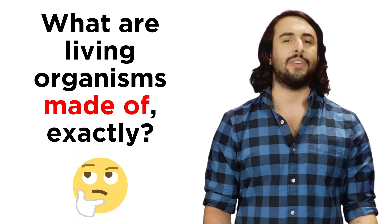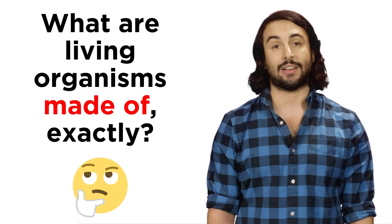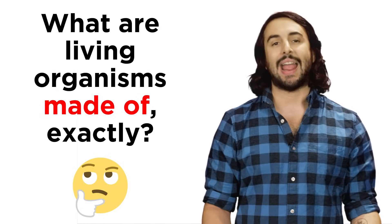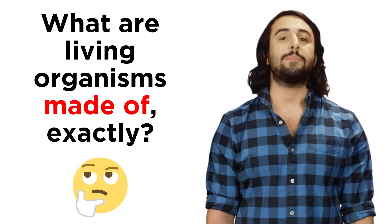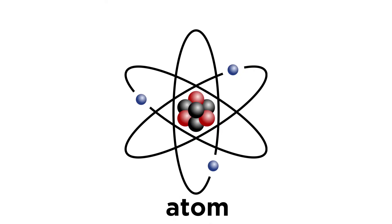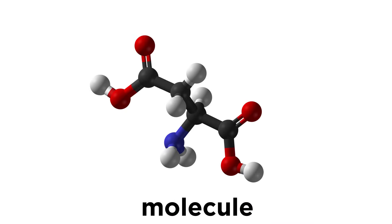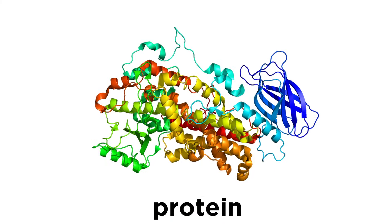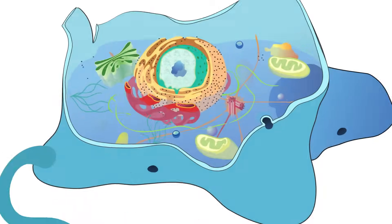So what are living organisms made of exactly? There are many ways to answer that question, it just depends how deep you want to go. The smallest things inside of you are tiny particles called quarks and electrons. These come together to make atoms, which make up molecules, which make bigger molecules, until we eventually get to a cell.